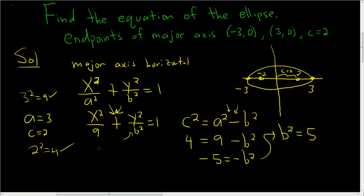So we just plug in b squared. So x squared over 9 plus y squared over 5 equals 1, and that's it. That is the answer. I hope this helps someone out there.